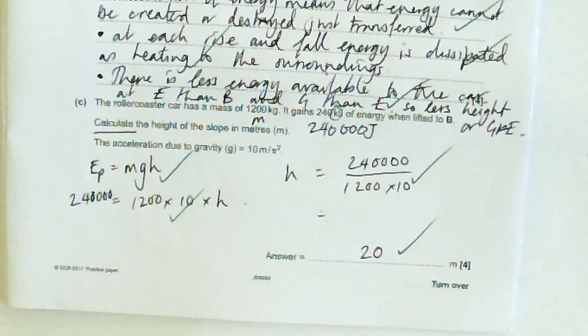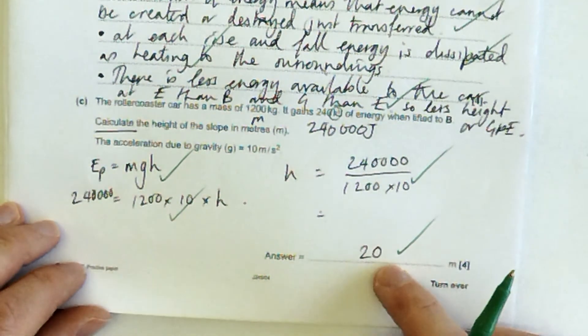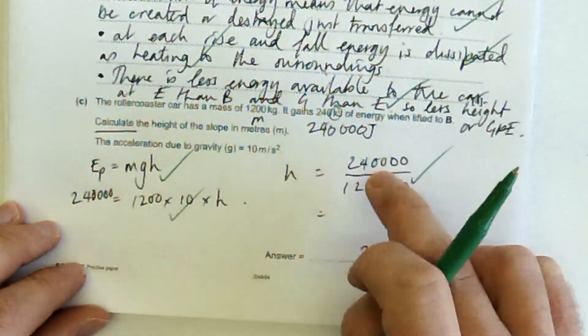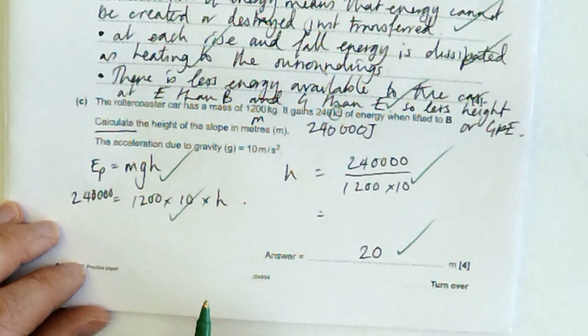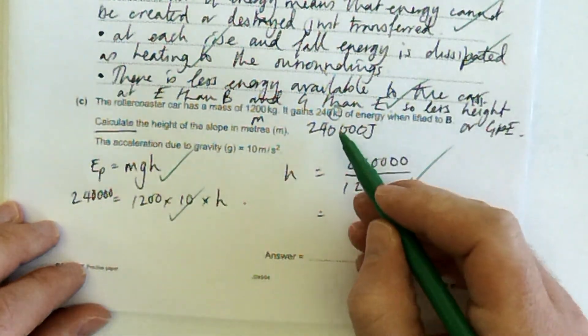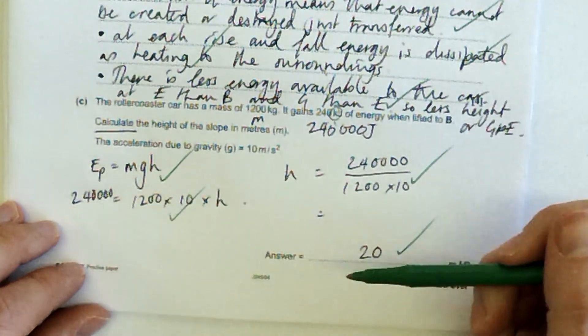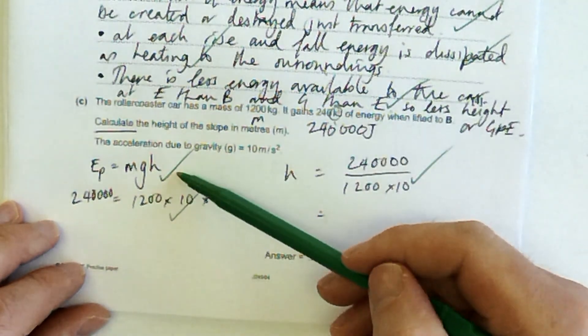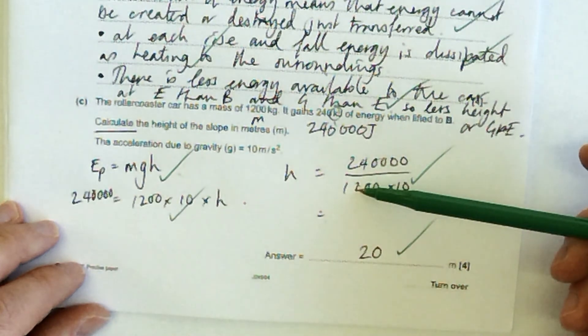Where are we getting the marks from here? Then we're getting a mark for remembering the equation. Easy peasy. We're getting a mark for having rearranged the equation, putting the numbers in the right place, and for the final answer. Of course, you do get 4 marks for writing down 20, but you're more likely to not get marks. If you made a mistake, then you could still be picking up marks all the way along. So if you've got 0.02 and you've not converted this, then you're probably still going to get two marks for having remembered the equation and for having rearranged it correctly.